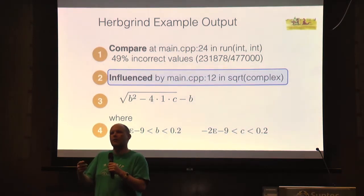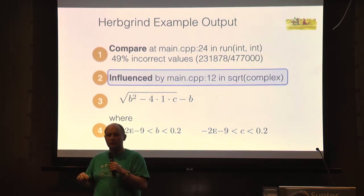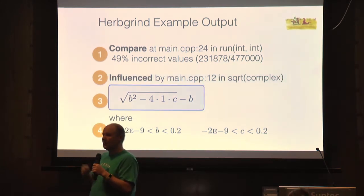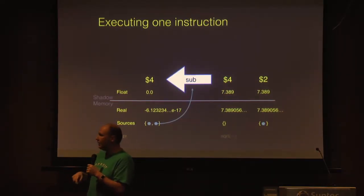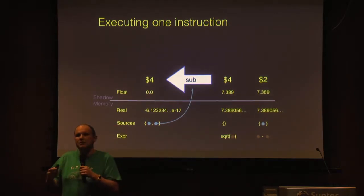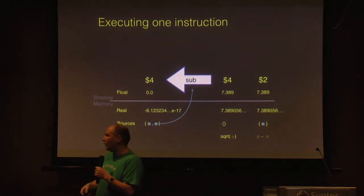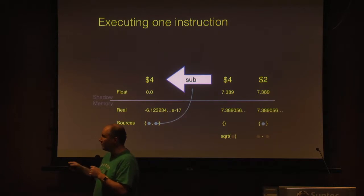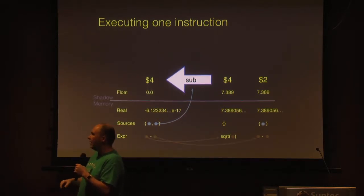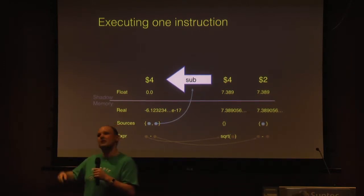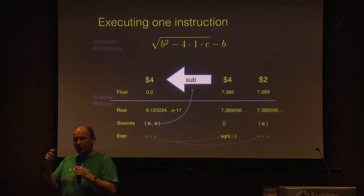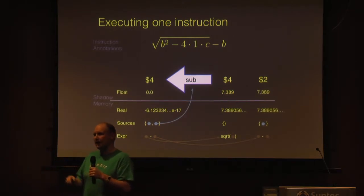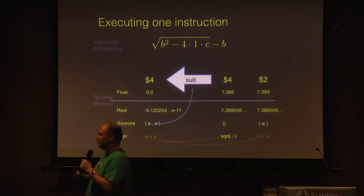This lets us figure out which operations were responsible for introducing error into an output. But we also want to hand back to the programmer not just a list of addresses in disassembled code — we'd like to give them some expression they can look at with intuition for how to improve. So we additionally track for every operand and result a symbolic representation of that computation. If register four contains square root of some expression and register two contains a difference of two expressions, we know the result corresponds to the difference of those expressions.